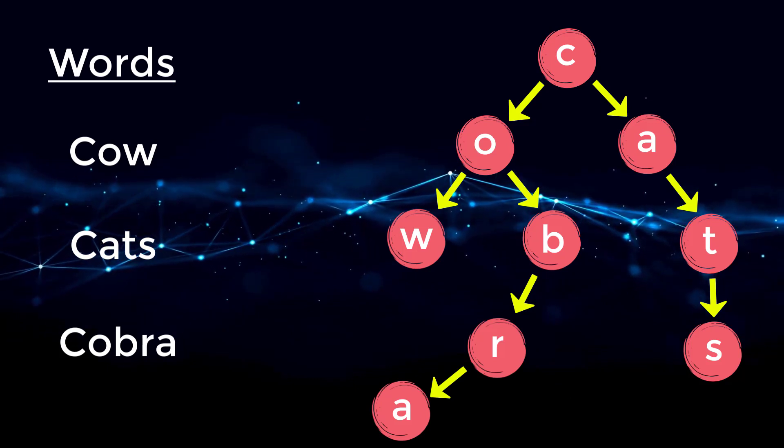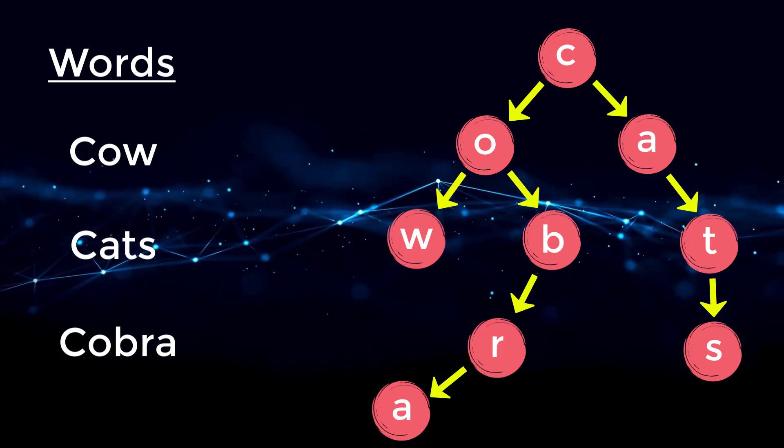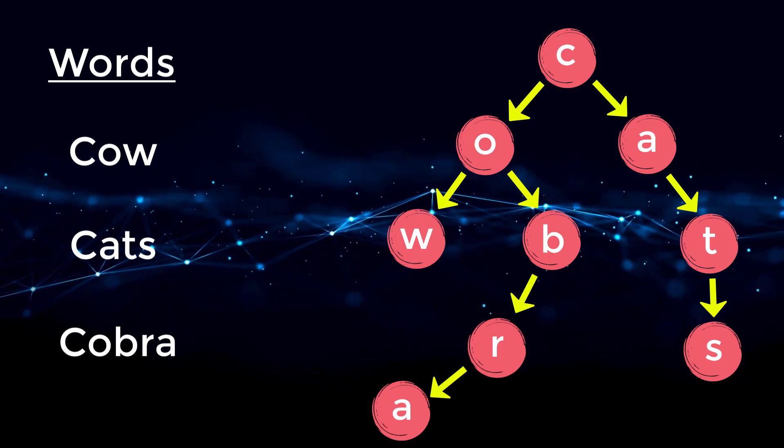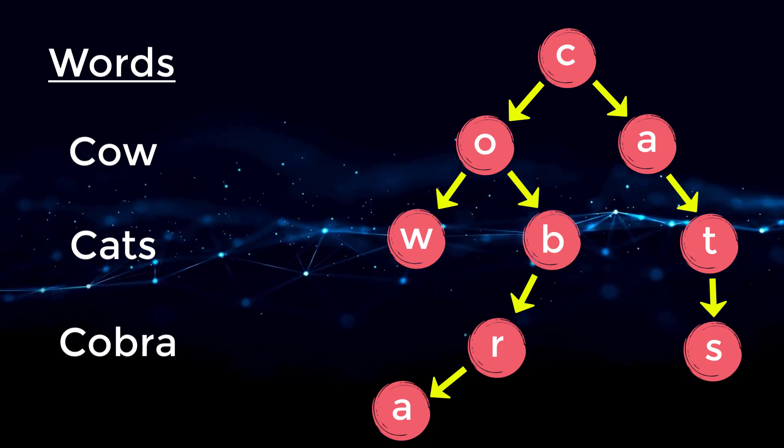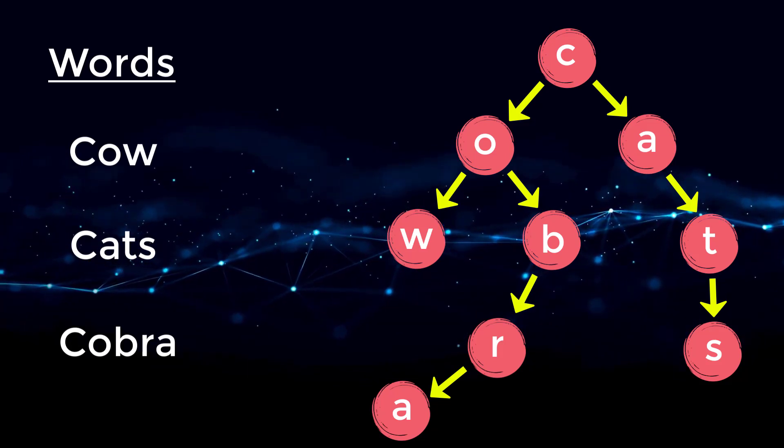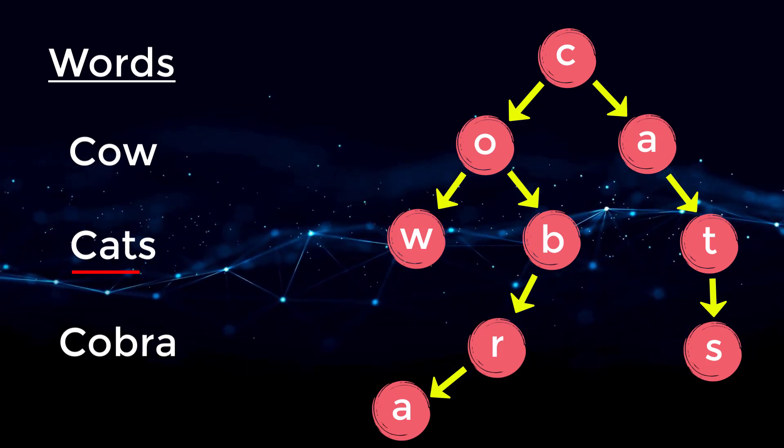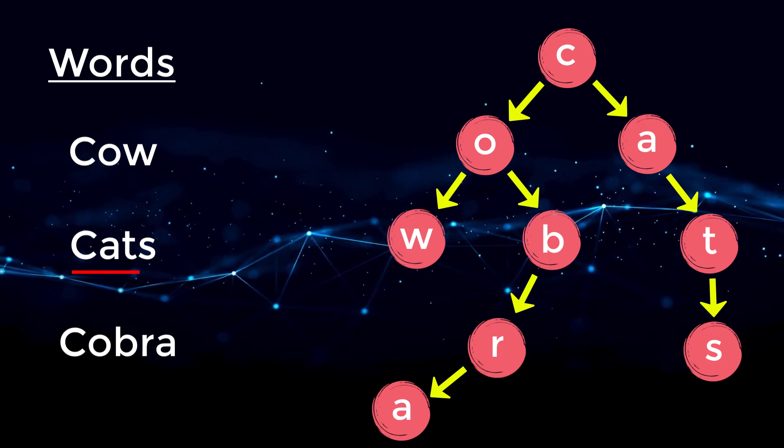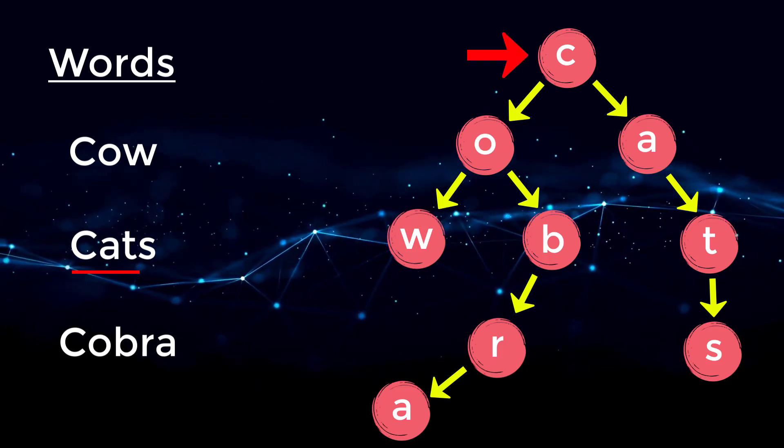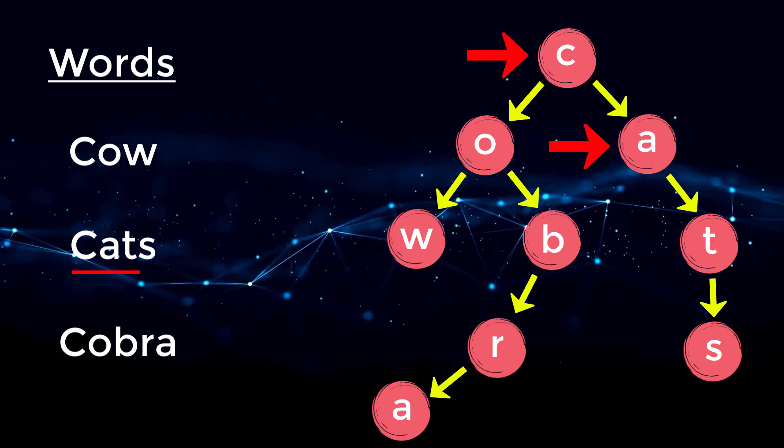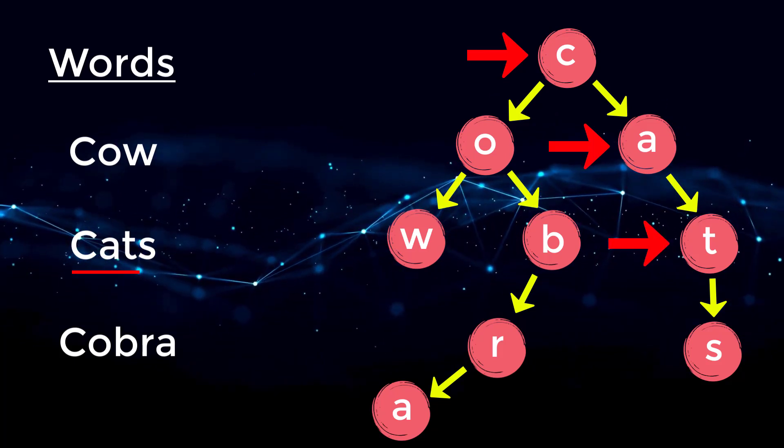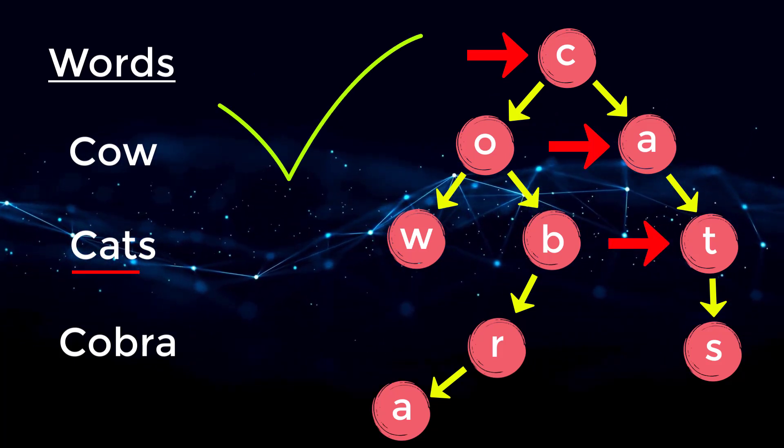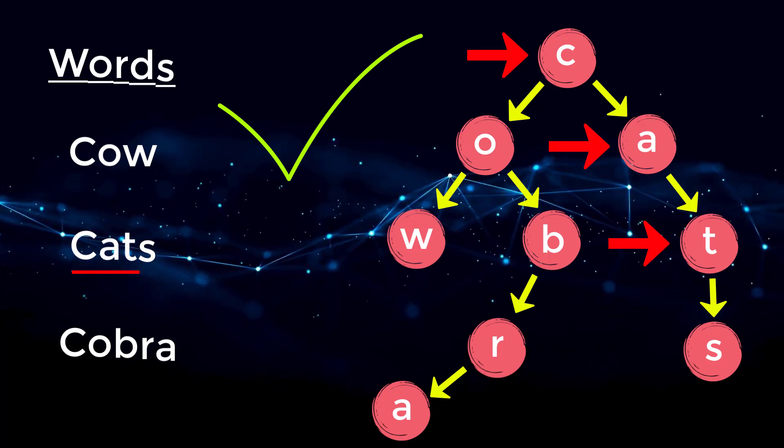So as you can see, this data structure is efficient for storing a wide variety of words inside of it. And the real power behind it is we can search for prefixes inside of it. So for example, let's say we wanted to search for the word cat to see if it exists. We would check if C is created. Yes, it is. Then we check if A is created. Yes, it is. Check if T is created. Yes, it is. And that means cat is inside of this trie data structure, and we would return true.